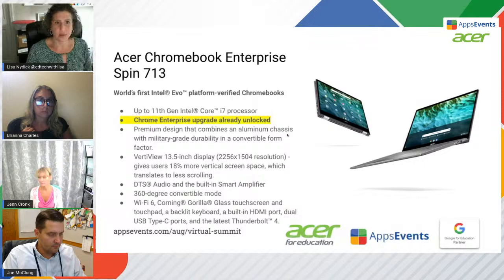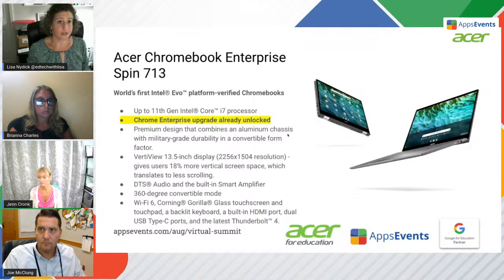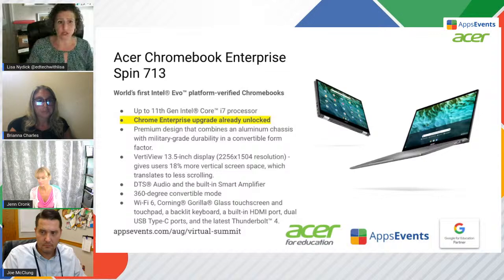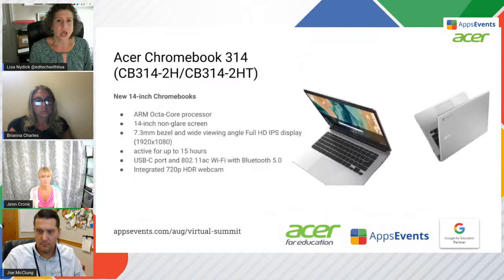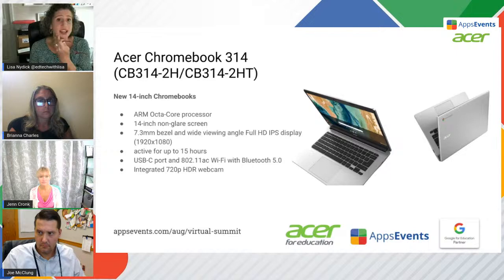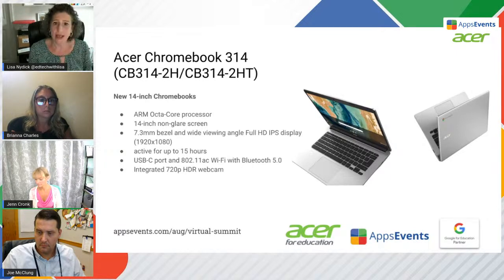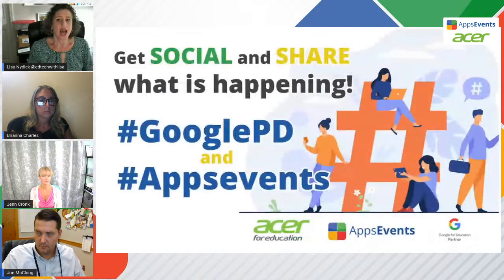The Spin 713 has a smaller screen, better for students — fits in backpacks — but you still have that vertical screen space because the screen goes all the way to the edges, with Thunderbolt 4 and WiFi 6. And then finally, the 14-inch non-glare screen Acer Chromebook 314 with a really great webcam. I encourage you to get social and share — Apps Events uses the hashtag #GooglePD and also #AppsEvents.